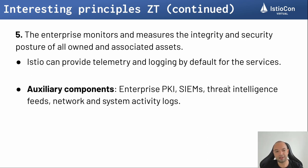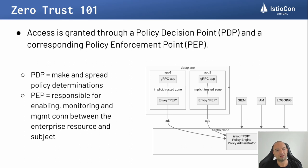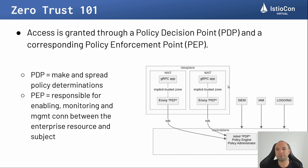It's important to note that zero trust principles also have auxiliary components that complete your entire architecture — such as enterprise public key infrastructures, CM systems, threat intelligence feeds, network and system activity logs, etc. The first core zero trust component is the Policy Decision Point (PDP) — this is where all policy determinations are made. The second is the Policy Enforcement Point (PEP) — this is the edge or data plane as we call it inside Istio, and is responsible for enabling, monitoring, and managing the connection and communication between the enterprise resource and the subject.